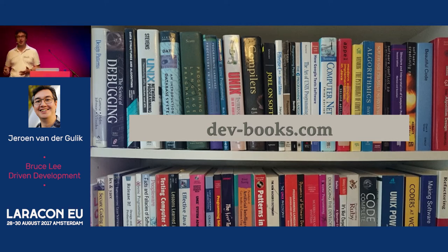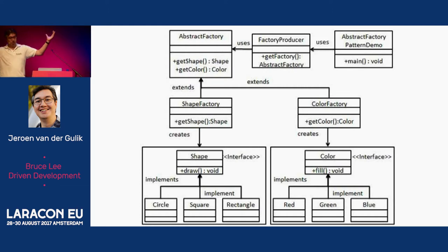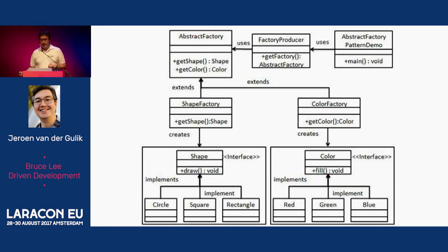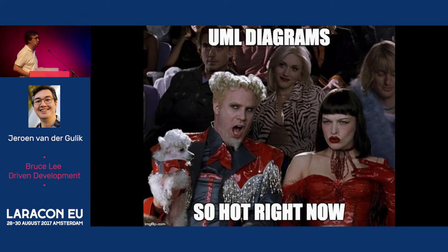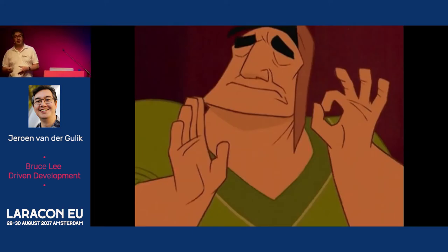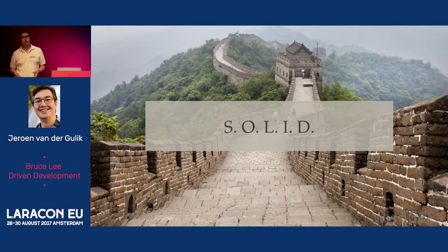Interestingly enough, 'Working with Legacy Code' is the most mentioned book on Stack Overflow by a large margin. I would say that says something about our industry. I also was a big fan of UML diagrams — these big designs of software. I thought that if I wrote my UML diagrams perfectly, I would build the perfect software. It would all be captured in this big software design and it would be the best ever. I also was a big proponent of SOLID. My code was very solid — solid like the Chinese wall, you could see it from outer space. That's how rigid my code was.